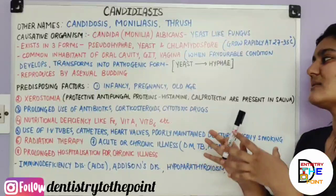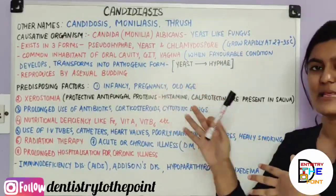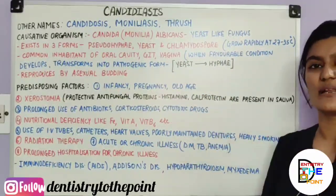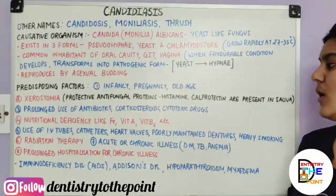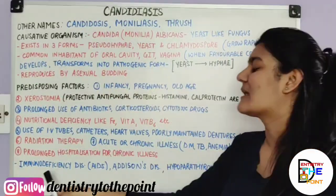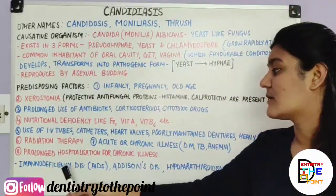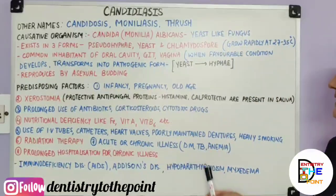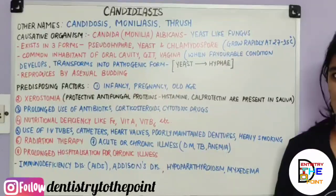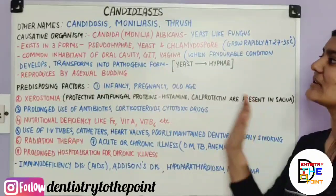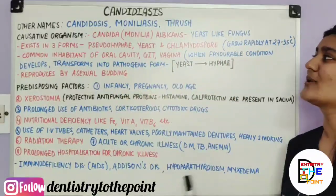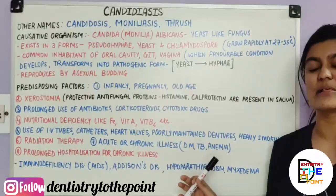To summarize the predisposing factors: first consider the ages, then talk about the oral cavity, then discuss illness and hospitalization. Some rare predisposing factors include immunodeficiency diseases such as AIDS, Addison's disease, myxedema, and hypoparathyroidism. These are all the predisposing factors and the introductory points for Candidiasis.